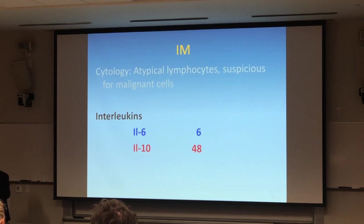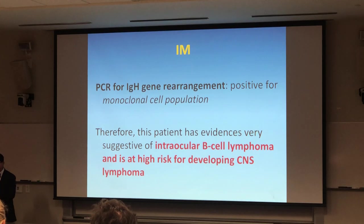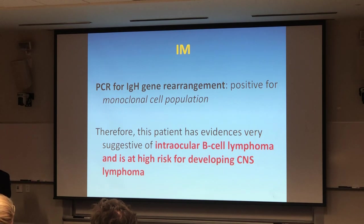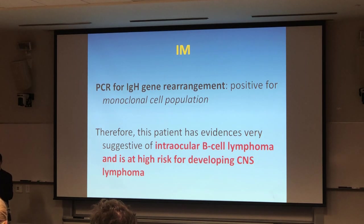Other work coming out from Brigham and Women's Hospital in Boston involves PCR for IgH gene rearrangement. Some of the work from Boston was also positive for a monoclonal cell population — quite important to show this aspect. This patient has evidence very suggestive of intraocular lymphoma, and is certainly at very high risk for primary CNS lymphoma.